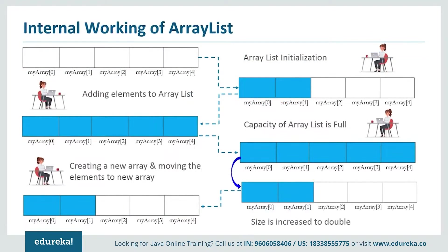Now let's move further and see the internal working of ArrayList. First, we create an empty array and then go on adding elements. Once the size of the array is full — that is, if the size of current elements is greater than the maximum size of the array — then we have to increase the size. Since the array size cannot be increased dynamically, what happens internally is a new array is created and the old array is copied to it. So automatically the size will be doubled and you can continue adding elements as required.